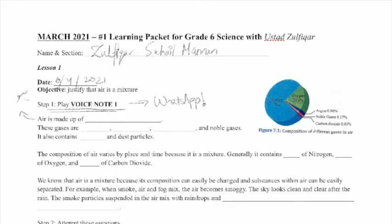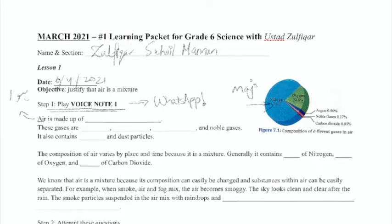Today's objective is to justify that air is a mixture. Air means water. Air is a mixture of gases. The major part is made from nitrogen.